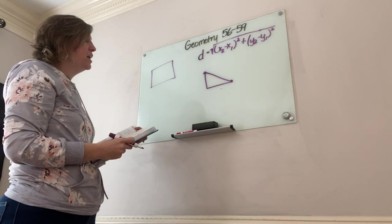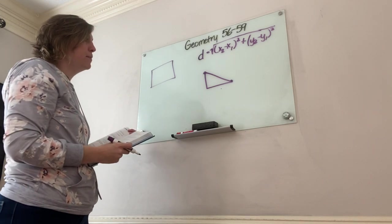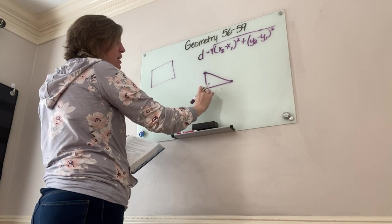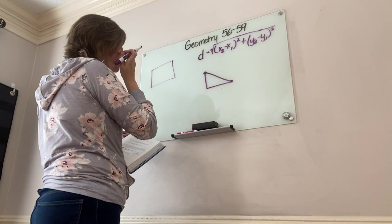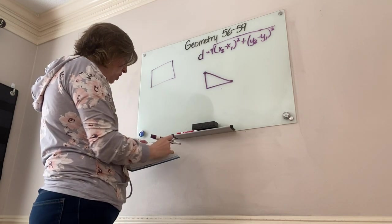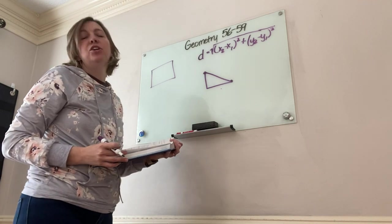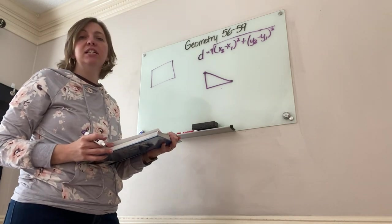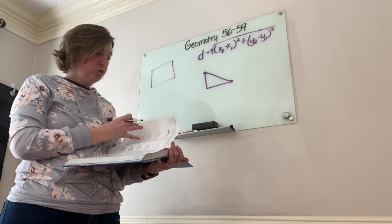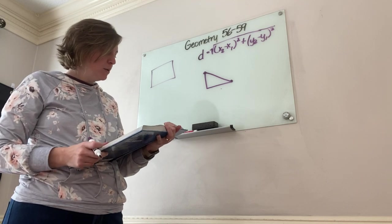Your book asks you to find the perimeter. Once you find the distance of each side, you just add those distances together. In Lesson 57, you're not just doing the distance formula once — you'll be doing it multiple times.